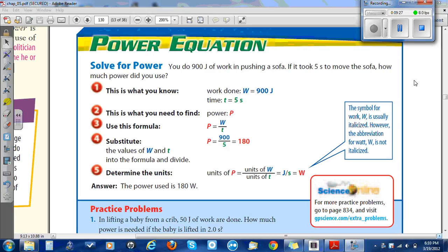Power equation. Solve for power. You do 900 joules of work in pushing a sofa. If it took five seconds to move the sofa, how much power did you use? Number one, this is what you know. Work done equals 900 joules. The time equals five seconds. This is what you need to find: Power, P. Use this formula: P equals W over T. Substitute the values of W and T into the formula and divide. 900 divided by 5 equals 180. Determine the units. The units of power equals the units of W divided by the units of T equals J over S equals W. The symbol for W is usually italicized. However, the abbreviation for Watt W is not italicized. That's how you keep them apart.